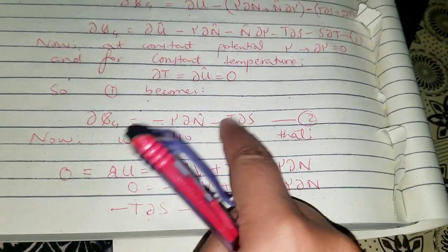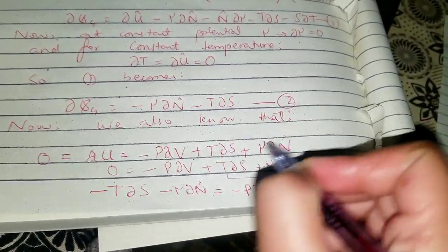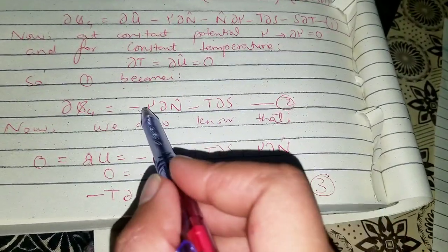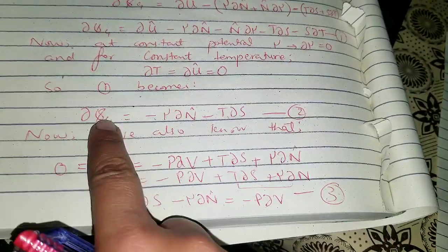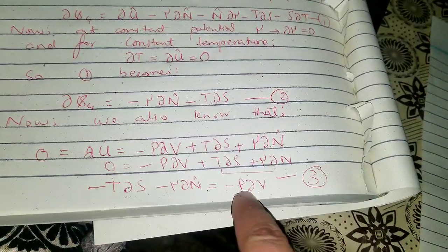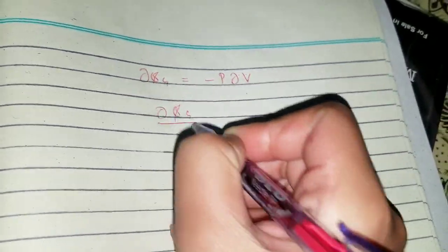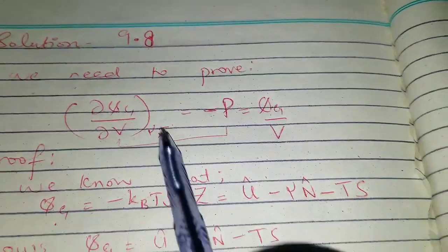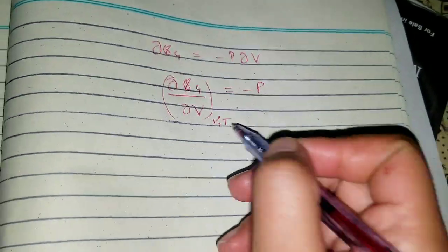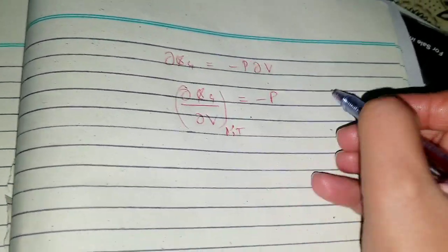The right-hand sides of our two equations match. Equating them: ∂Ψg = -p∂V, at constant μ and T. This completes the first part of the proof.